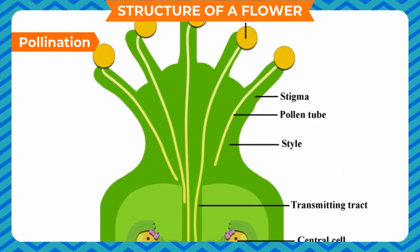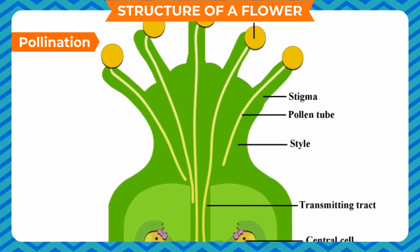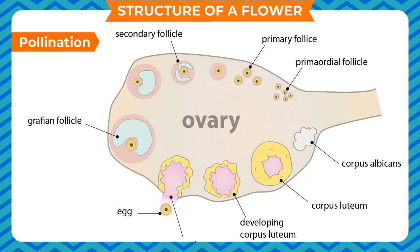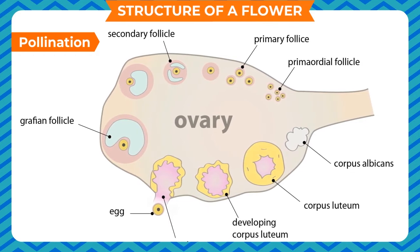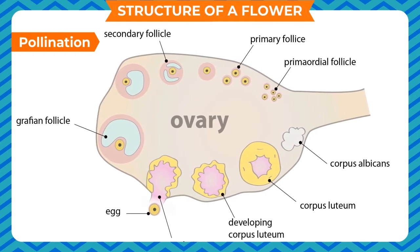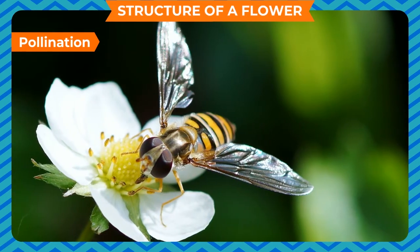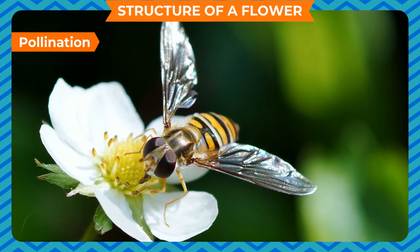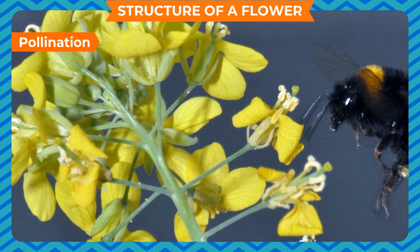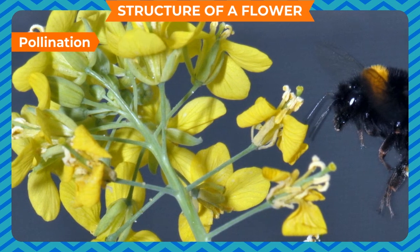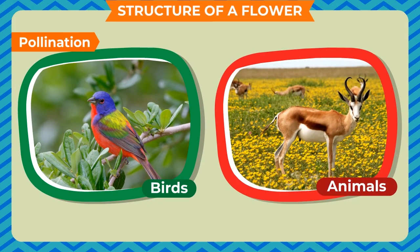Pollination: Pollen grains are transferred to the stigma, from where they travel to the ovary via the style. It is in the ovary where fusion takes place. The process of transfer of pollen grains from the anther to the stigma is termed pollination. Pollination may take place between different flowers or within the same flower. The agents of pollination include insects, birds, animals, and wind.